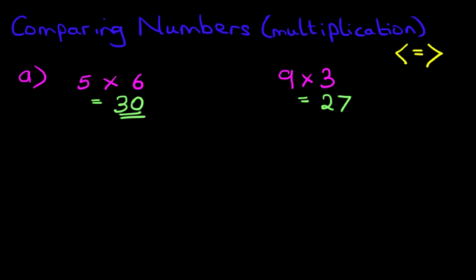So now we are comparing 30 and 27. Which number is smaller? The smaller number is 27. So therefore we put this symbol between them. Don't forget the arrow in yellow points to the smaller number. So 5 times 6 is greater than 9 times 3.